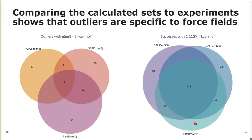On the other hand, looking at successes with a deviation of less than one kcal per mole, there are a lot of perturbations shared between the different calculation sets. About 24 perturbations have the lowest deviation with the Parsley parameters — which is encouraging. In future work, we should investigate the 30 perturbations where Parsley performs worst and try to see whether there's something wrong with the parameters or whether we can improve them.